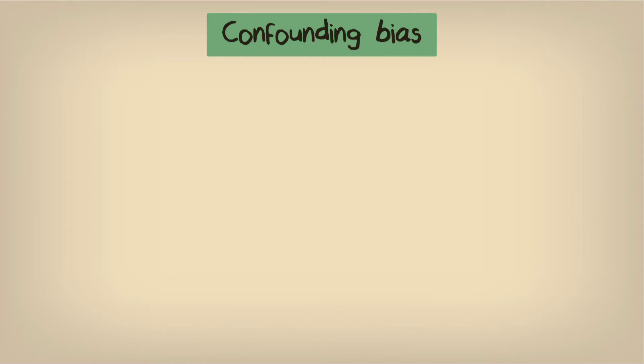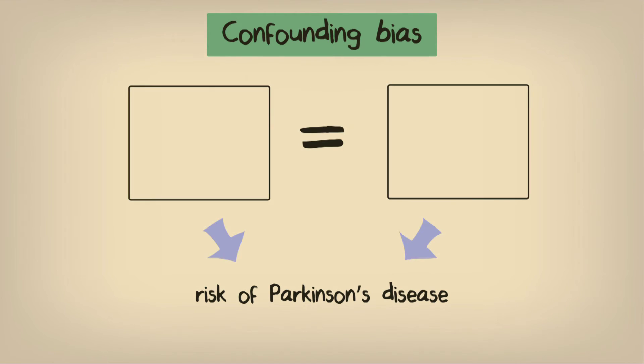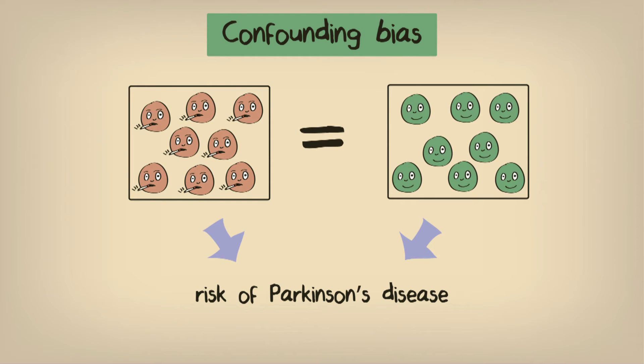Consider the following example. We are interested in studying the effects of smoking on the risk of Parkinson's disease. In order to establish whether or not smoking indeed causes Parkinson's disease, we need to make sure there are no differences between smokers and non-smokers regarding other risk factors for Parkinson's disease, such as age or alcohol consumption, or that these differences are accounted for.